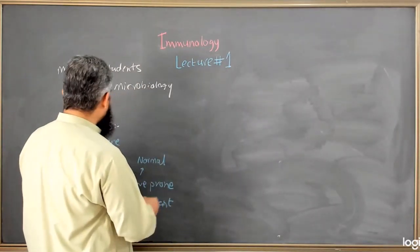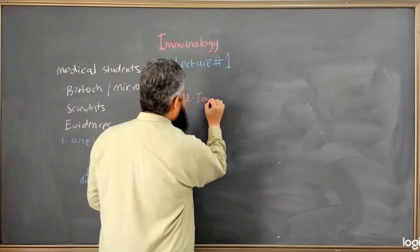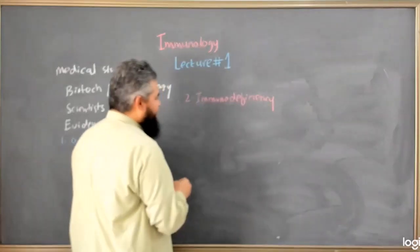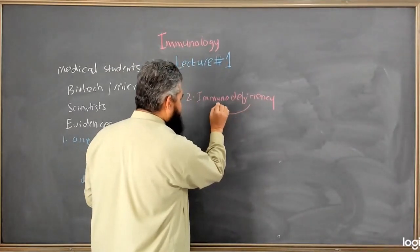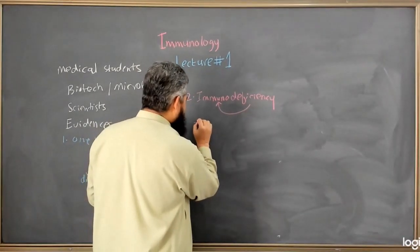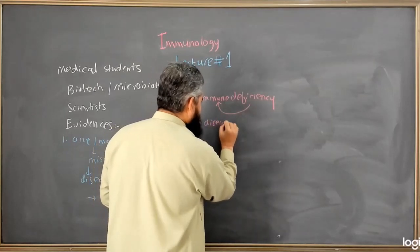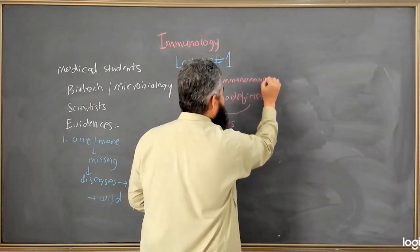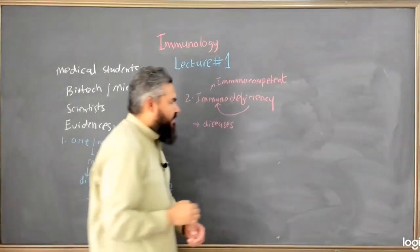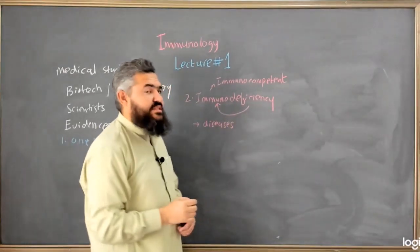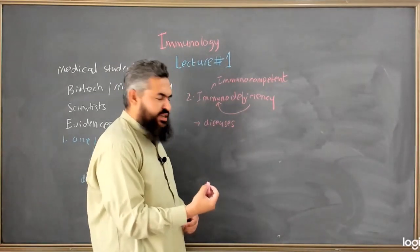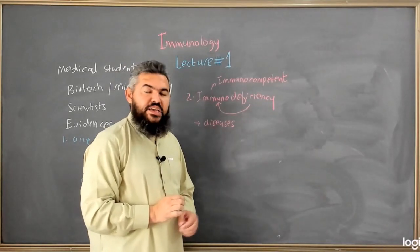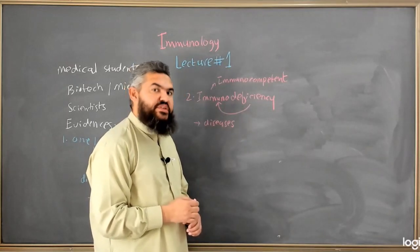The second evidence comes from a term known as immunodeficiency. This term means that there are some deficiencies in the immune system of living organisms, and because of this deficiency they are more prone to diseases as compared to immunocompetent individuals. Immunocompetent means all components of the immune system are working properly, while immunodeficiency means some components are not working properly. If there is a deficiency in the immune system and you are more prone to diseases, that is yet another evidence which proves the immune system exists.